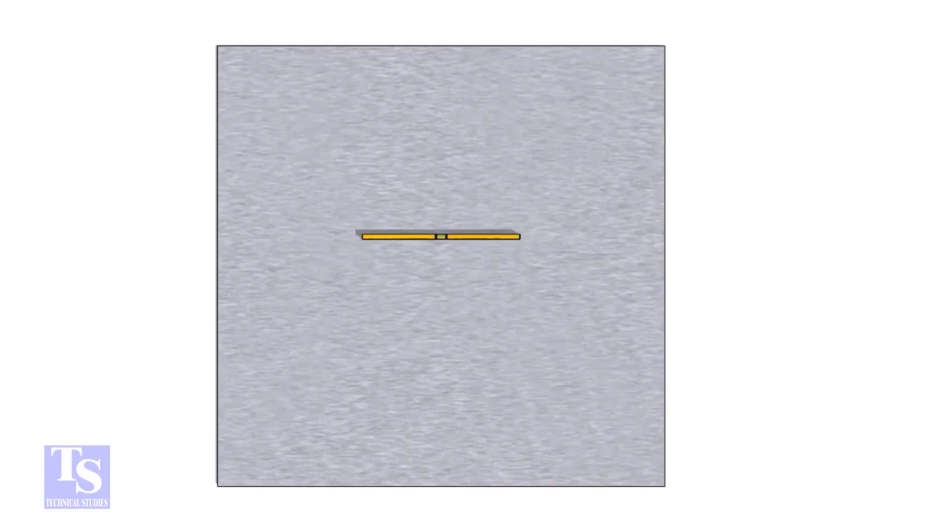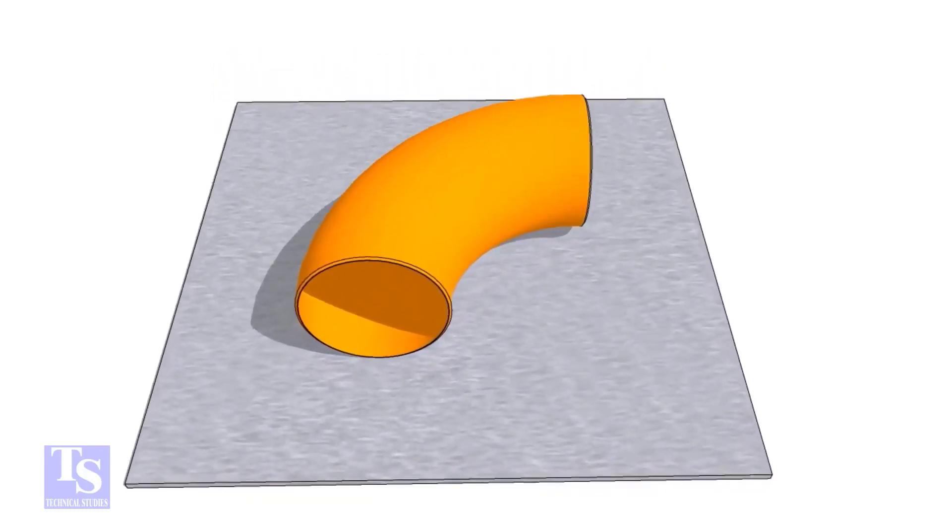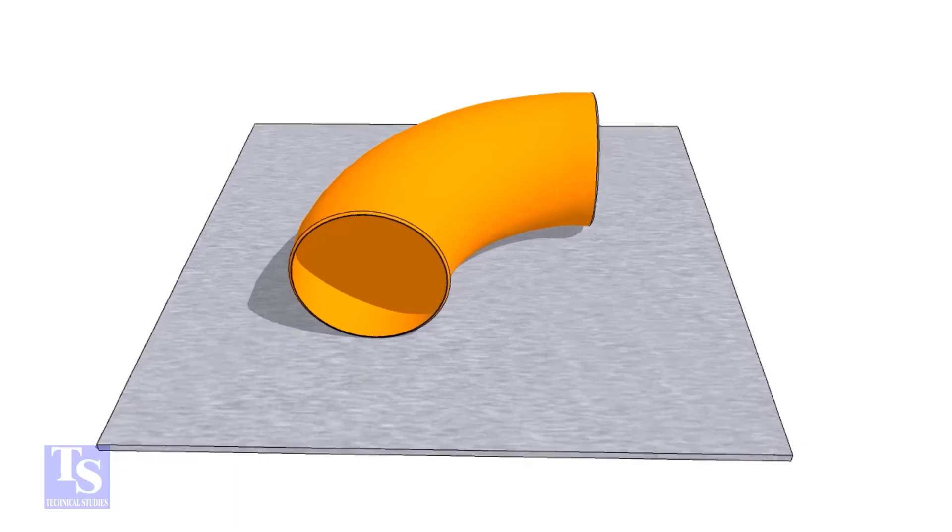First of all, choose a leveled plate and put the elbow on it. Check the outer diameter of the elbow.